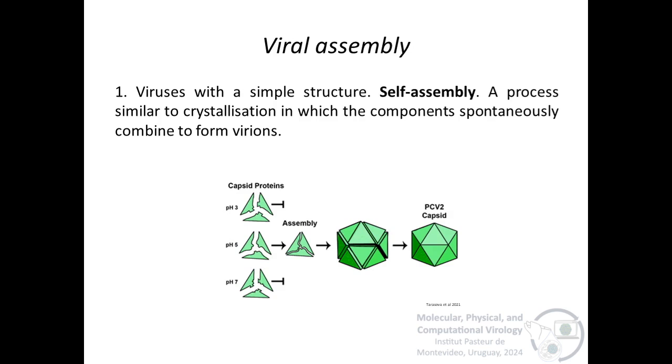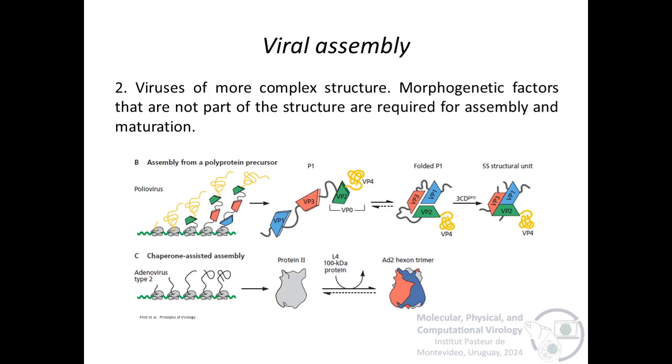The simplest capsids can self-assemble. In the case of porcine circovirus 2, protein subunits must be in close proximity and certain pH or ionic conditions must be present for self-assembly to occur. The mechanism is mainly governed by thermodynamics and assembly kinetics. And assembly reactions are driven by the high concentration of protein subunits synthesized in infected cells.